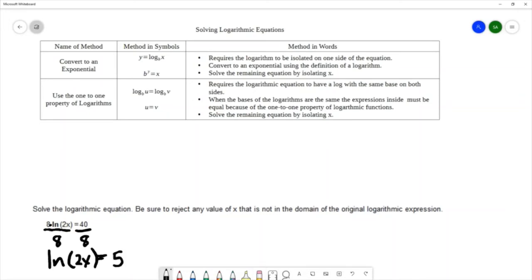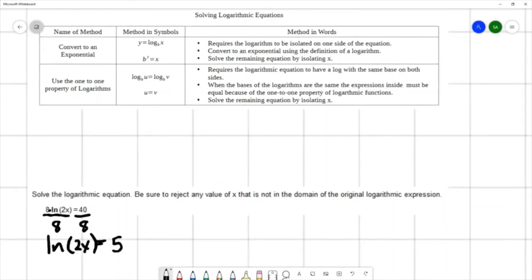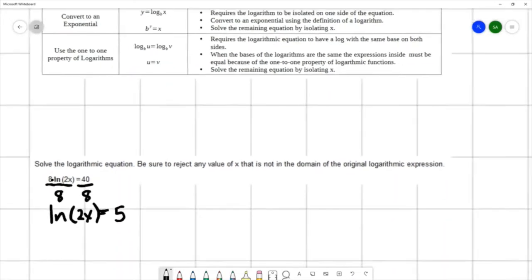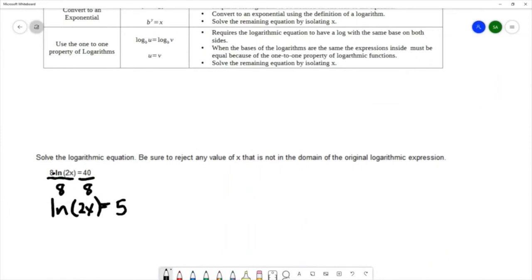So now we have our log isolated on one side of the equation, and now we're going to convert to an exponential. To convert to an exponential, we need to know what base we have on our log. We're using the symbols ln, which stands for natural log, and natural log is having a log with base e, the natural base. So these symbols ln are equivalent to log with base e of 2x equals 5.